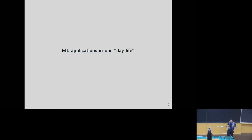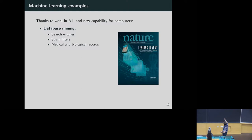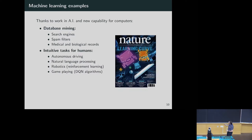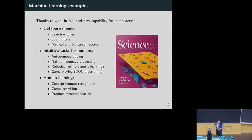By doing that, we have many day-life applications: medicine, where people can detect lesions; database mining; searching genes; spam filters — everything we use in real life. We also have applications for intuitive tasks for humans, like autonomous driving, natural language processing, and game playing — for example, deep Q-networks. And there are applications involving human learning, such as capturing concepts and product recommendations. Today if you look around, we are surrounded by products from Google, Apple, and all these big companies.